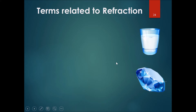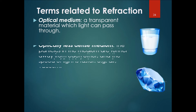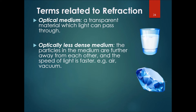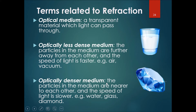Let's talk about terms related to refraction. The first is optical medium — a transparent material which light can pass through. Then you have an optically less dense medium, where the particles are further away from each other and the speed of light is faster. An optically denser medium is where the particles are nearer to each other and the speed of light is slower.